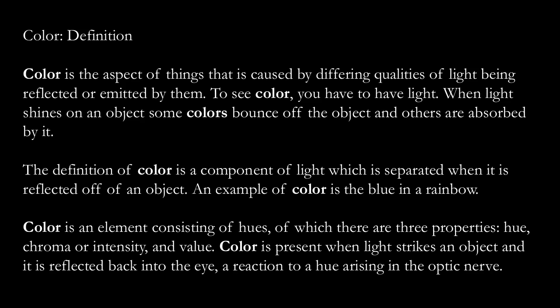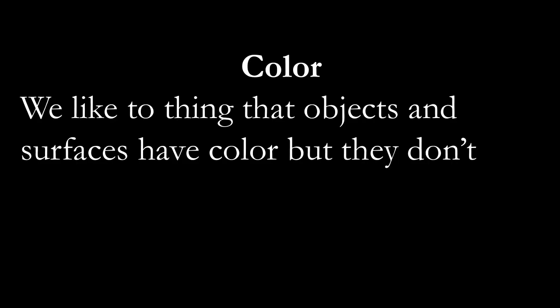Color is present when light strikes an object and it is reflected back onto the eyes, and a reaction to the hue arises in the optic nerve. We like to think that objects and surfaces have color, but they don't. Let's repeat that: we like to think that objects and surfaces have color, but they don't.